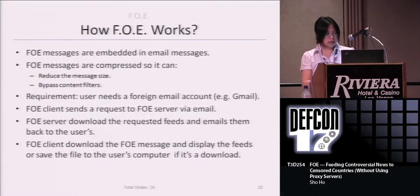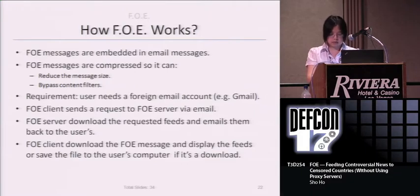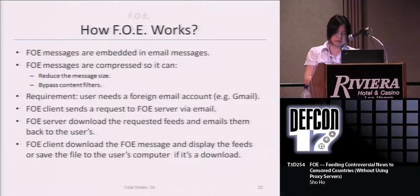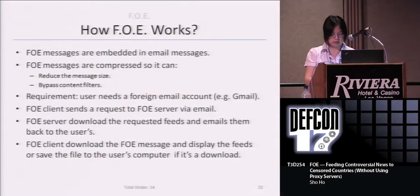So let's summarize how FOE works. FOE messages are embedded in email messages. FOE messages are compressed to reduce message size and bypass content filters. The requirement is that users need a foreign email account, for example Gmail. FOE clients send a request to a FOE server via email. The FOE server downloads the requested feeds and emails them back to the user. The FOE client then downloads the FOE message and displays the feeds or saves the file to the user's computer.